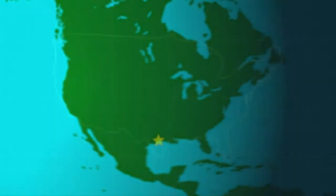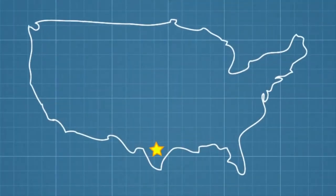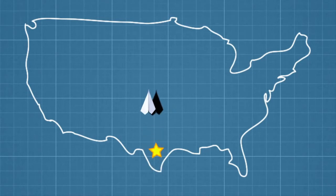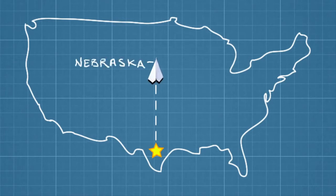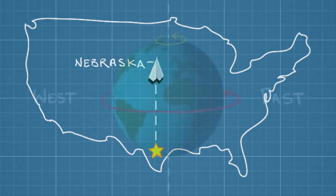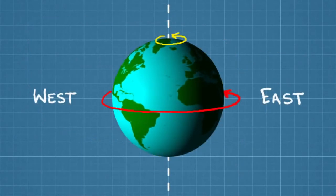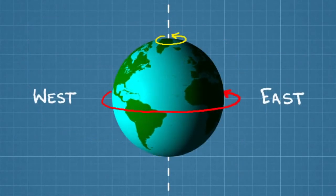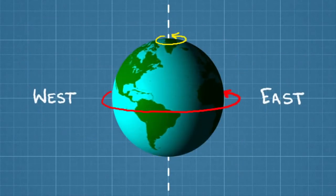So imagine you were standing in Texas and had a magic paper airplane that could travel hundreds of miles. If you threw your airplane directly northward, you might think it would land straight north, maybe somewhere in Nebraska. But Texas is actually spinning around Earth's axis faster than Nebraska is, because it's closer to the equator.